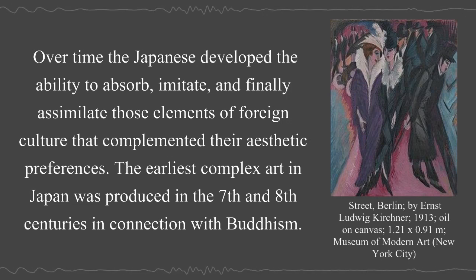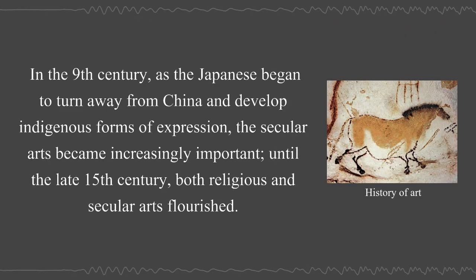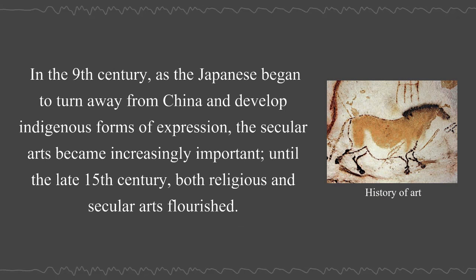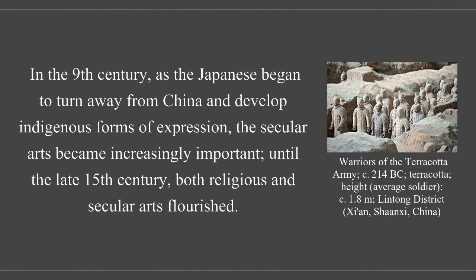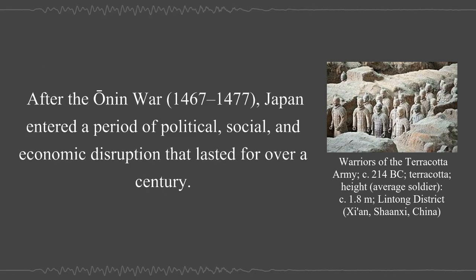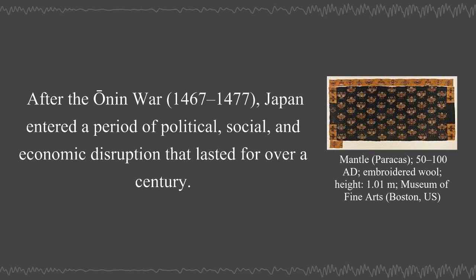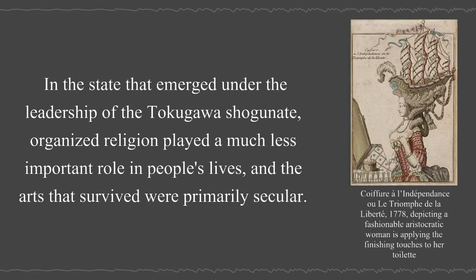The earliest complex art in Japan was produced in the 7th and 8th centuries in connection with Buddhism. In the 9th century, as the Japanese began to turn away from China and develop indigenous forms of expression, the secular arts became increasingly important. Until the late 15th century, both religious and secular arts flourished. After the Onin War, 1467–1477, Japan entered a period of political, social, and economic disruption lasting over a century. In the state that emerged under the Tokugawa shogunate, organized religion played a much less important role, and the arts that survived were primarily secular.